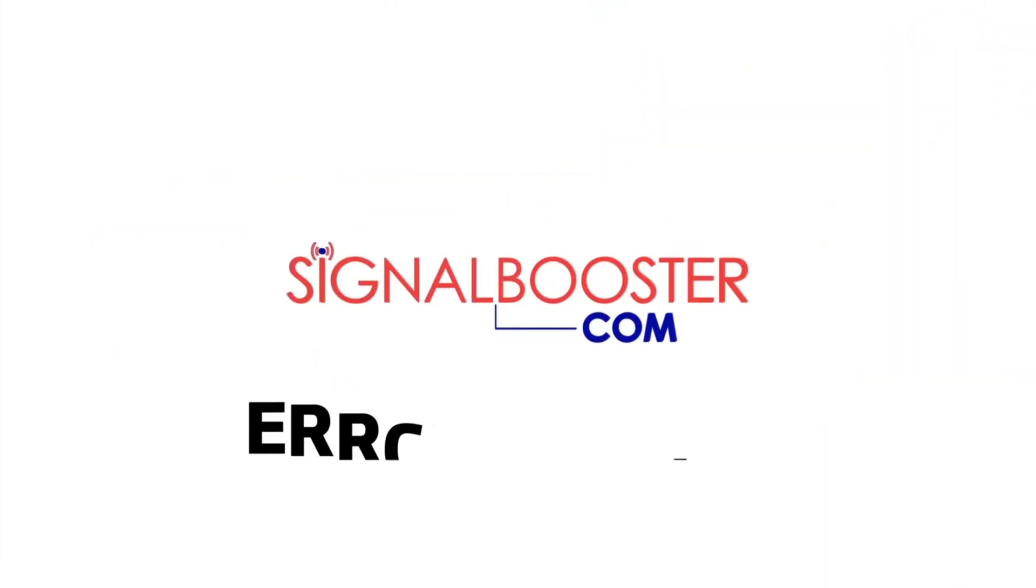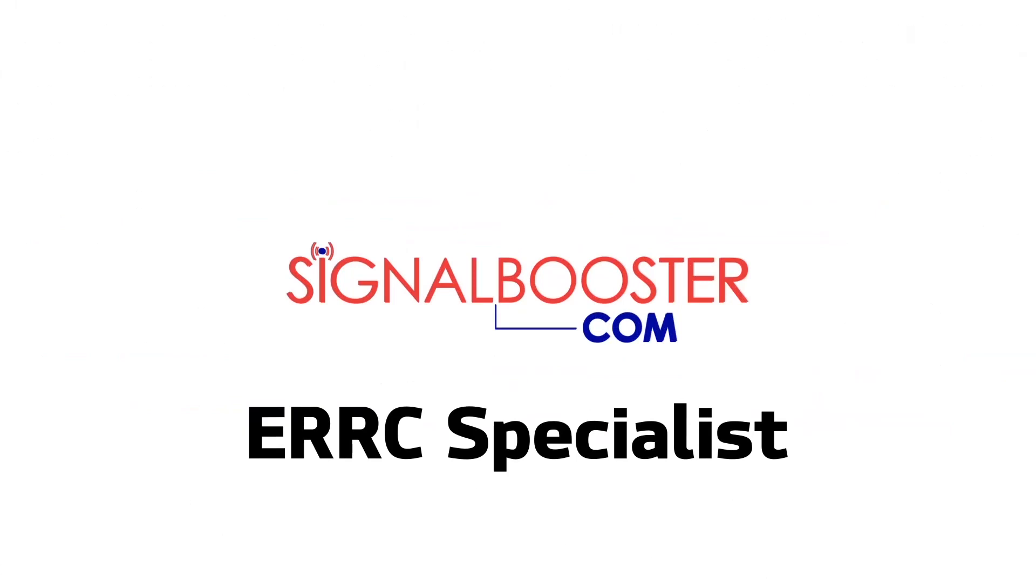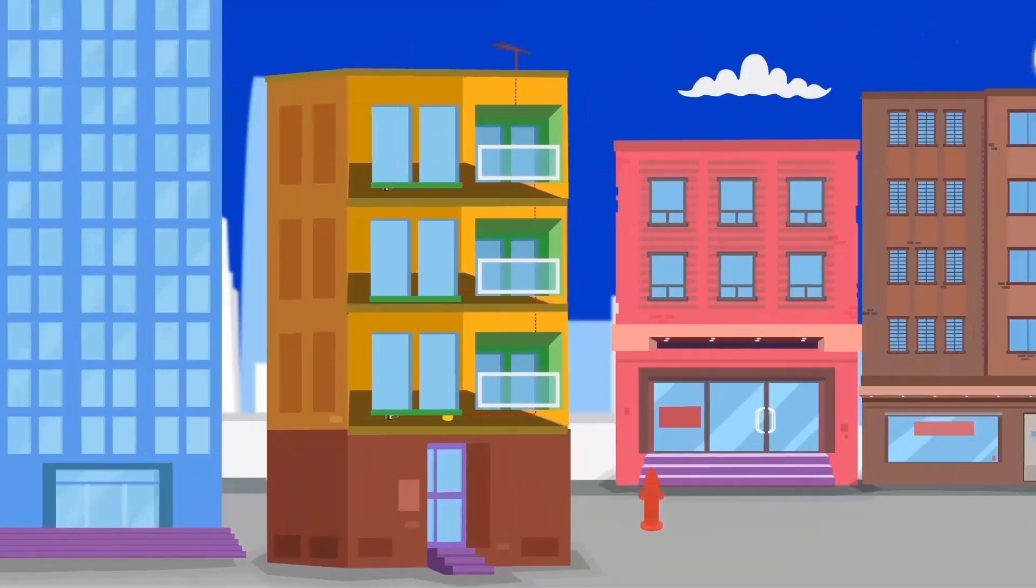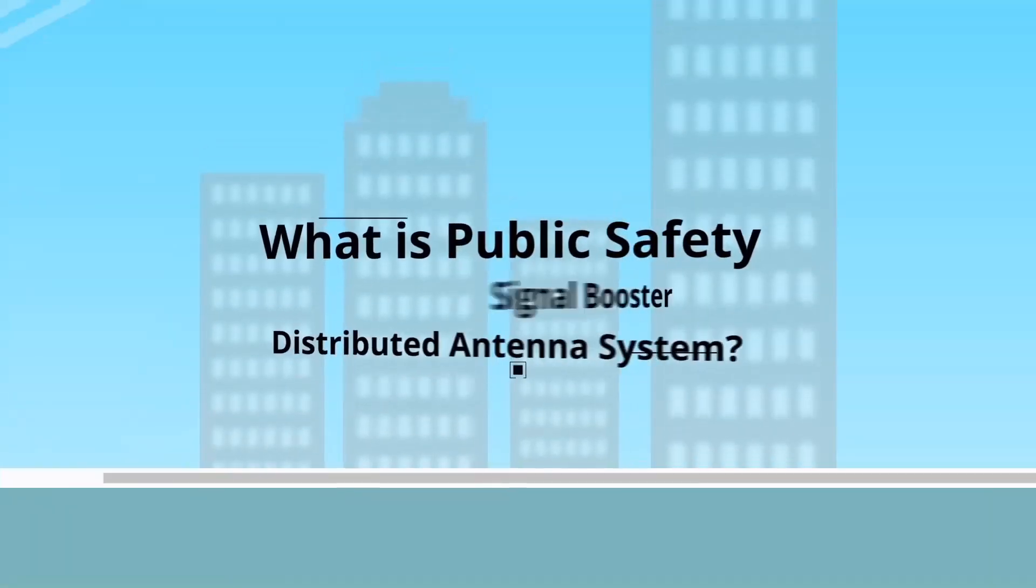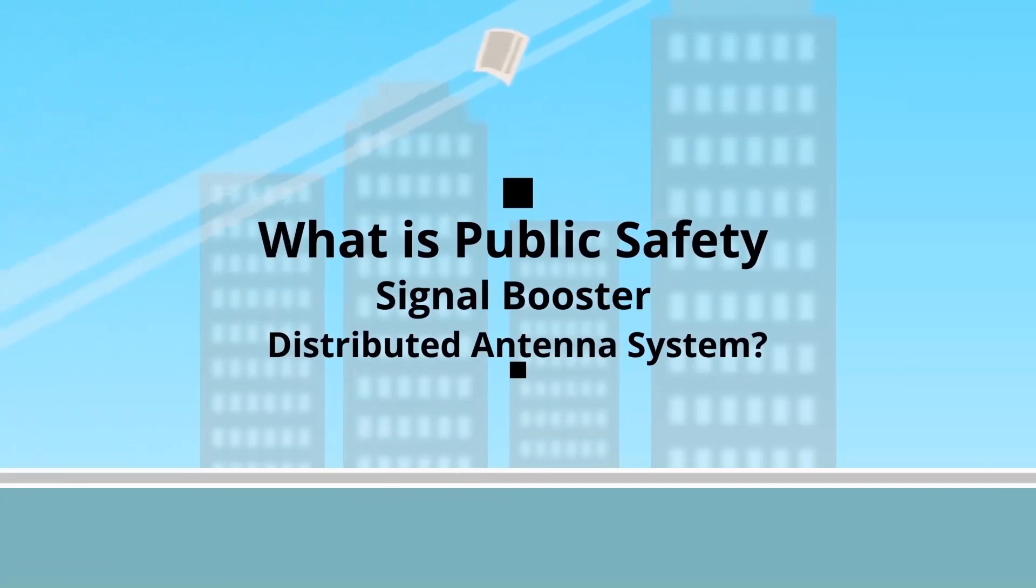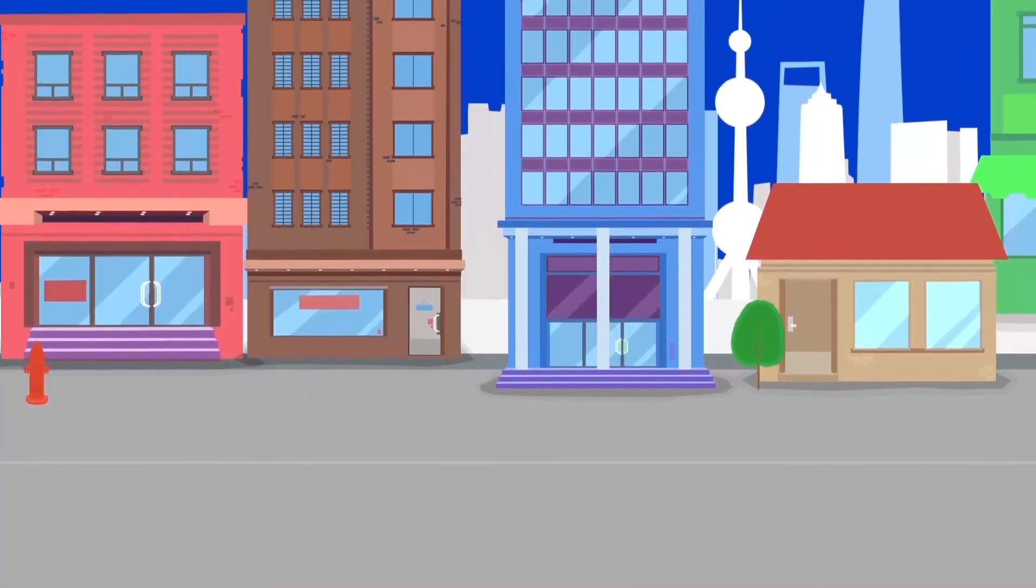Signalbooster.com is an emergency responder radio coverage specialist that can help with testing and, if needed, installing a public safety signal booster or distributed antenna system. What is a public safety signal booster or distributed antenna system? It is a signal enhancement system that closes wireless coverage gaps for first responders in all parts of a building.